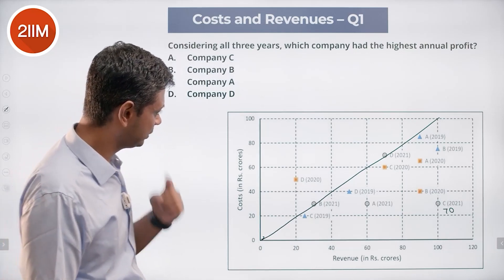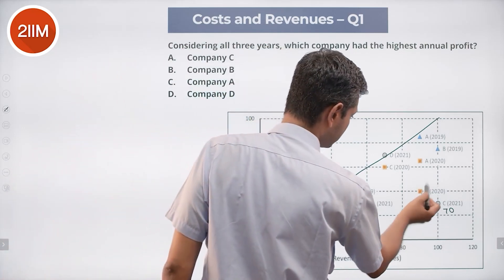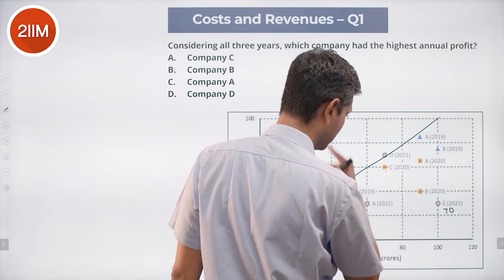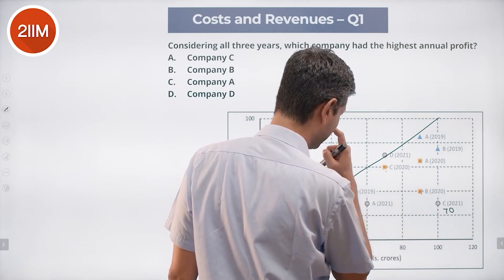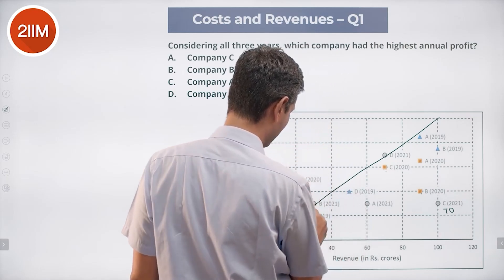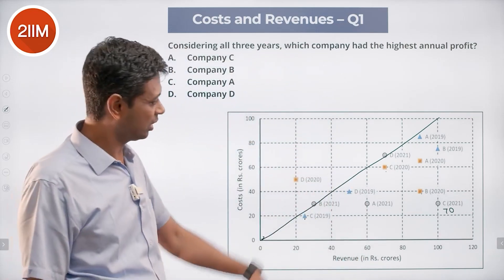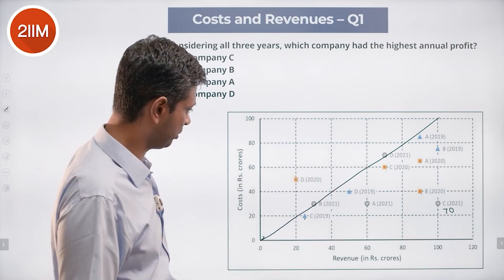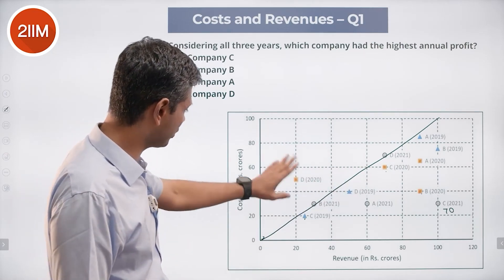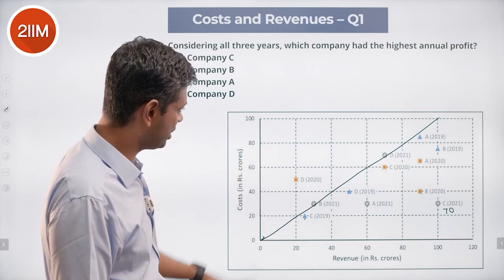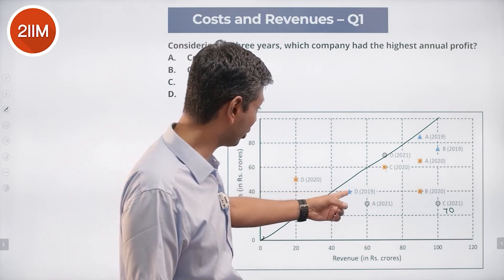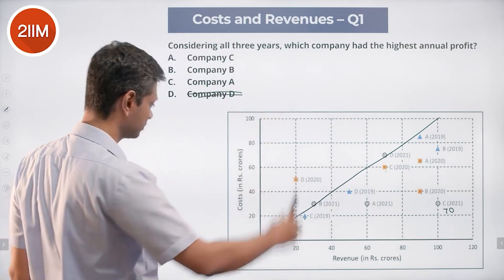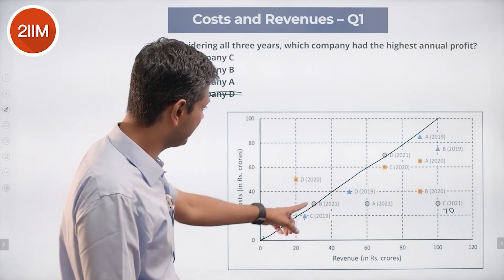Looking at C's numbers across all three years: C has more profit than B here. In 2019, C didn't make too much money, but 2020 and 2021 are big numbers. D is here — slightly profitable, not much at all — so I'm going to ignore D. Let's look at A, B, and C.